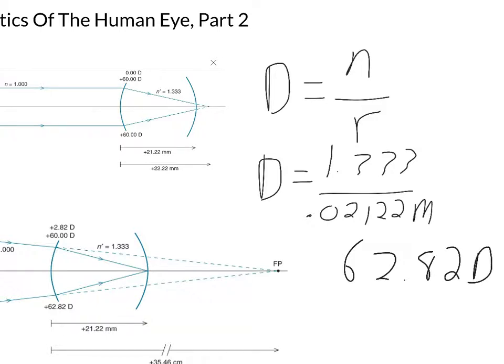So this is what you need. This is what you need in order to put the focal point on the retina. So you need 62.82 diopters to put the focal point over here on the retina.